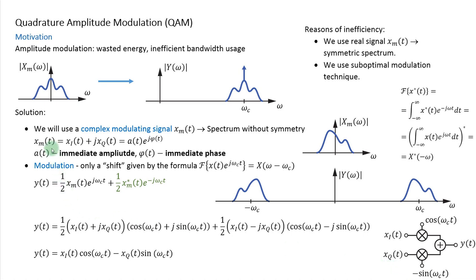One more thing: the complex modulating signal can be written in rectangular form or in polar form. In polar form, A(t) gives the magnitude of the complex number and φ(t) gives its phase. Since this is a signal rather than a constant, both the amplitude and phase change in time — they tell us the amplitude and phase at each immediate moment t. We therefore call them the immediate amplitude and the immediate phase.